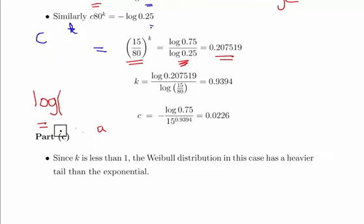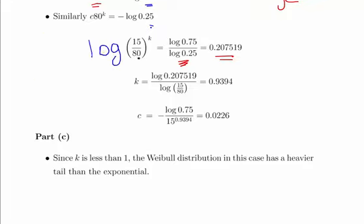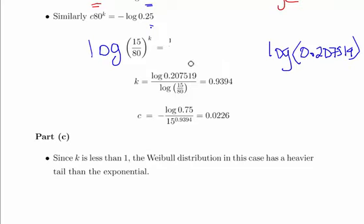What we're going to do is get the logarithm of this: log of 15 over 80 to the power of K, and let that equal log of 0.207519. You can disregard the stuff in the middle there.